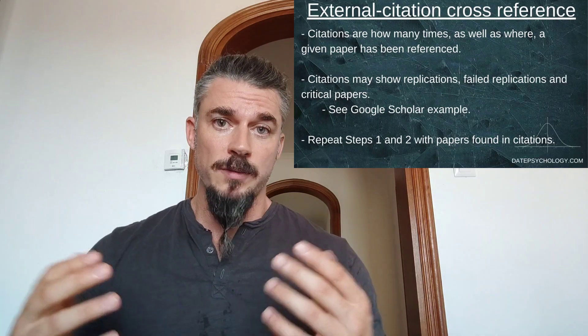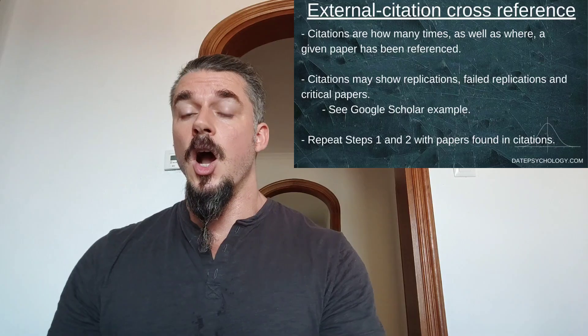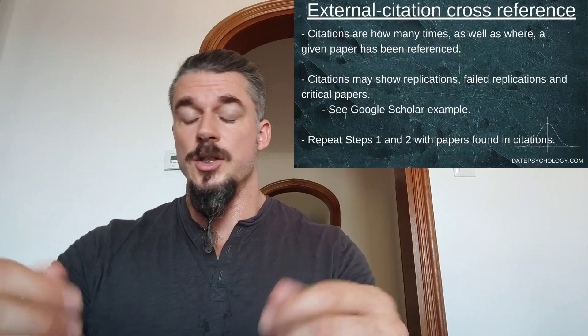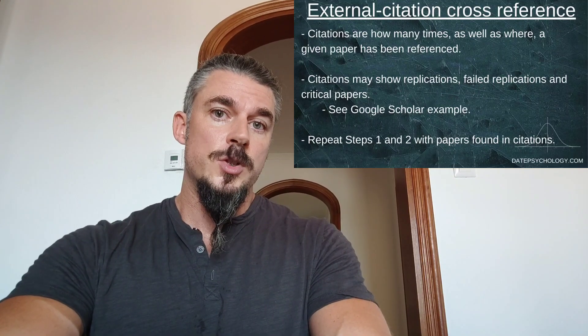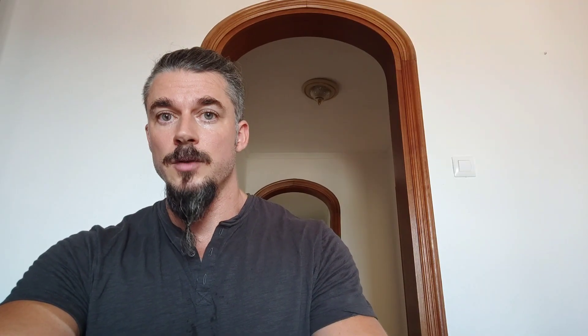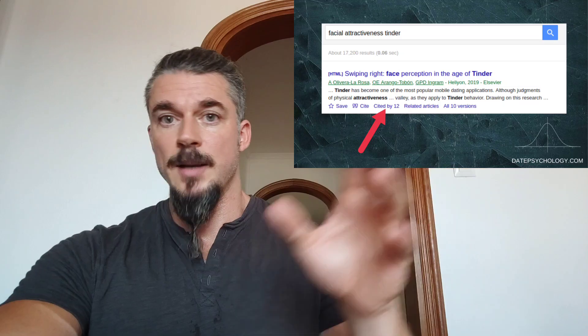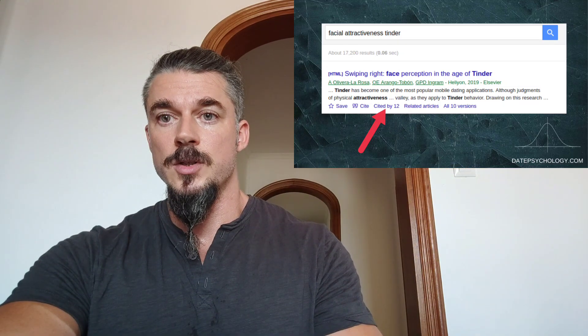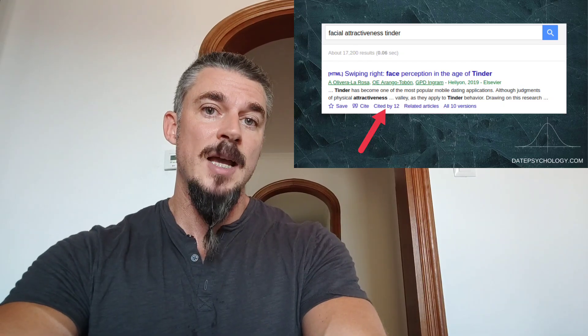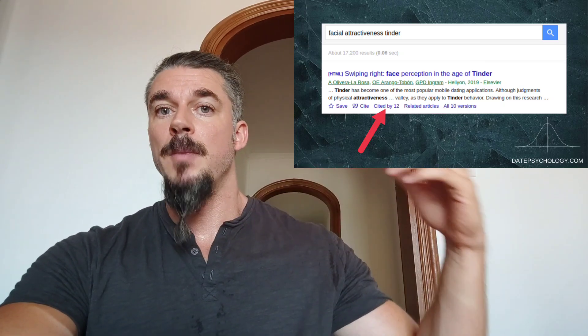Let's say you're done with step two — we can move on to step three, which is a cross-reference of citations. By citations, I mean other papers that have cited the paper that you are reading. If you search for a keyword — I'll put an example up from Google Scholar, and this will also apply to EBSCOhost, PubMed, or whatever you're using — when you do this search, it will come up and you'll see something that says citations, showing how many times a paper has been cited by other papers.